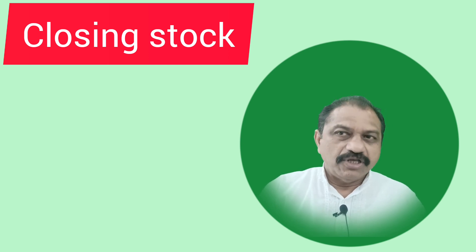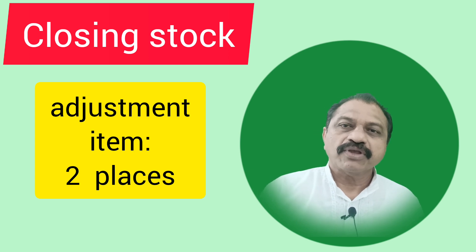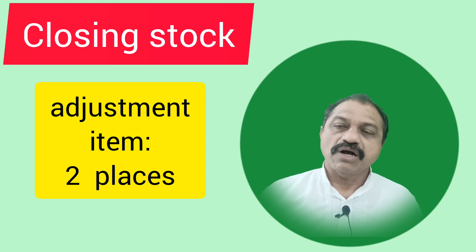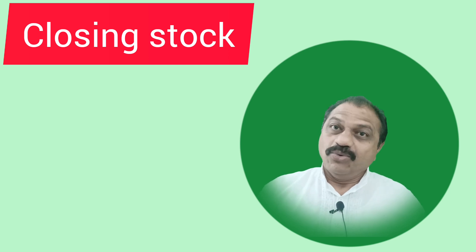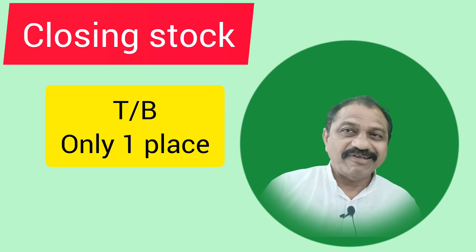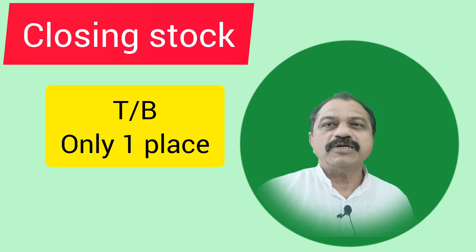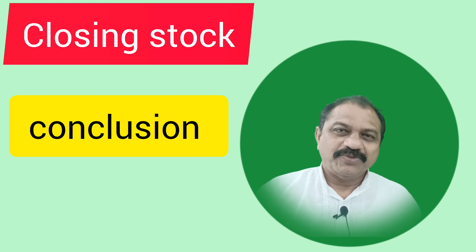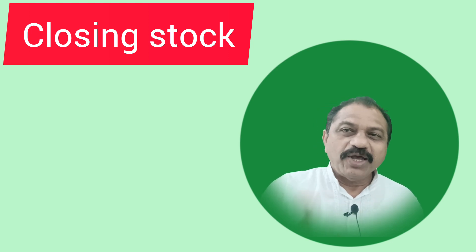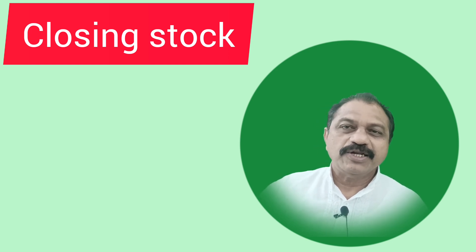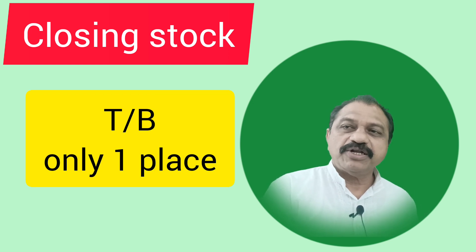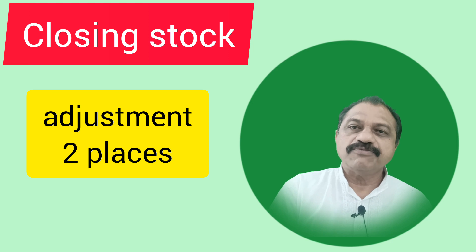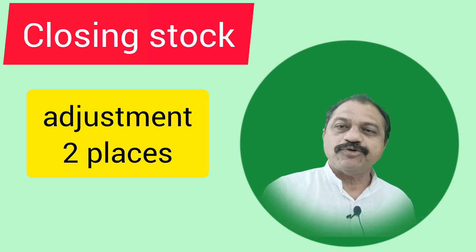In short, if closing stock is given as an adjustment item in the problem, it should be taken for two purposes: one, credit in the trading account, and two, asset side of the balance sheet. On the other hand, if closing stock is given in the trial balance, it will appear at the asset side of the balance sheet alone. This leads to a general conclusion: while preparing the trading, profit and loss account and balance sheet, any item appearing in the trial balance will be taken only for one purpose, but any item appearing in the adjustment or additional information part should always be taken for two purposes.